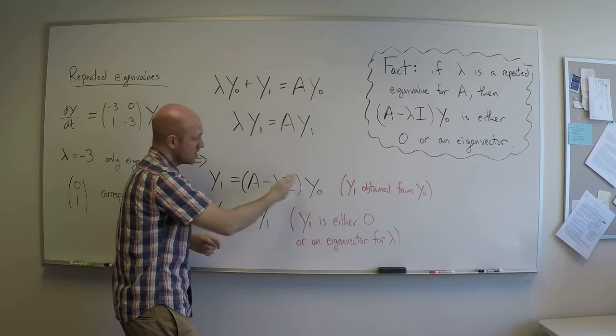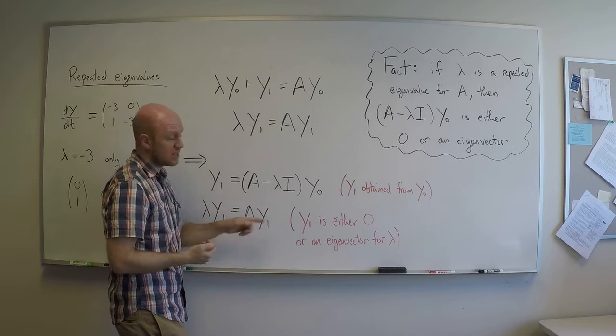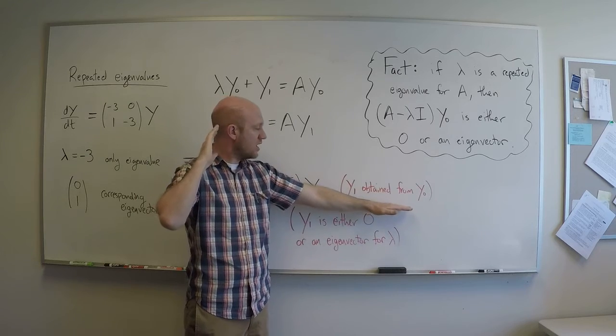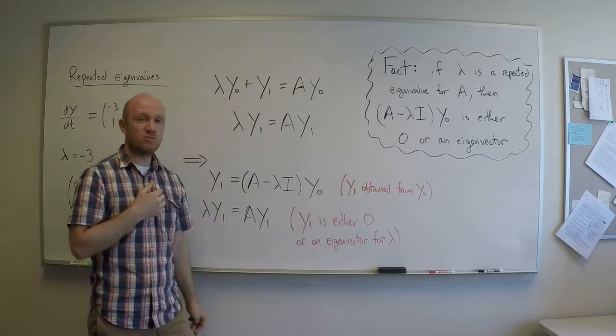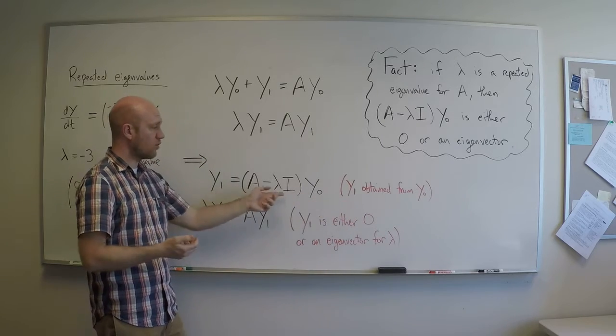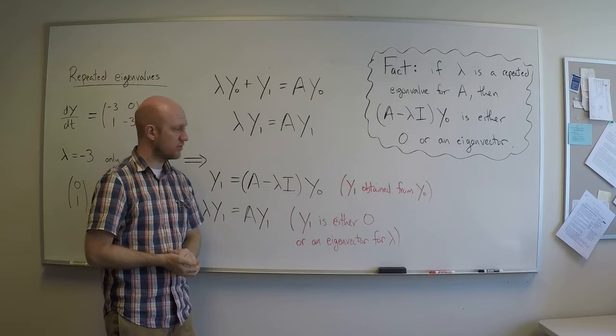So kind of just keep in your head, this means that y1 is obtained from y0 somehow. So if I know what y0 is, I can get y1 by applying this matrix to y0.